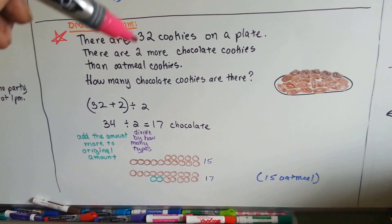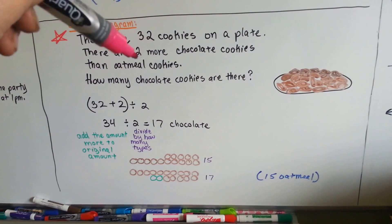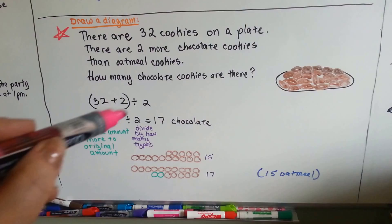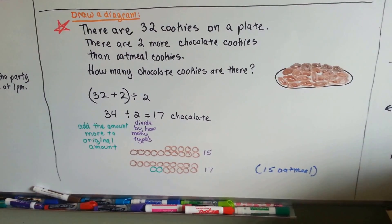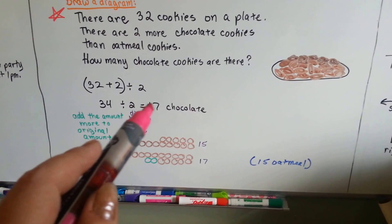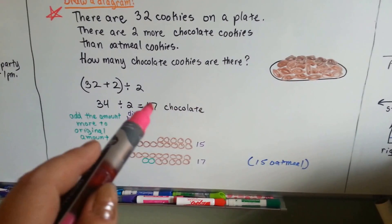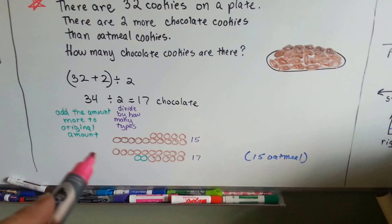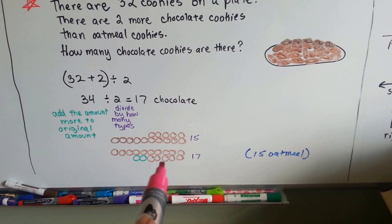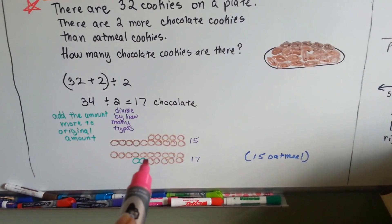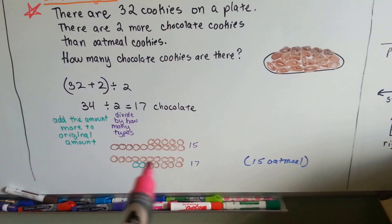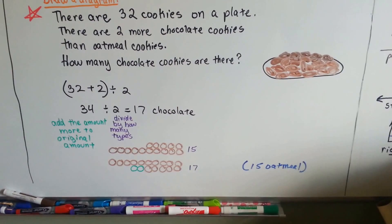We take the 32 and the two more chocolates, and we add them together. And we get 34. Then we divide it by 2. I know this sounds like crazy math to some people, but this works. The 34 divided by 2 becomes 17, and that's how many chocolate ones there are. See? And if you take 32 cookies and split it into two piles, you can see that there would be 17 and 15, because there's 15 oatmeal ones and 17 chocolate. That would get you the 32.